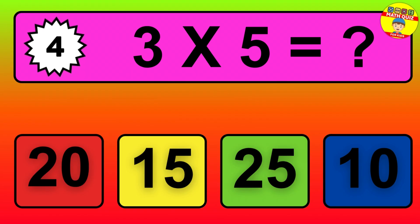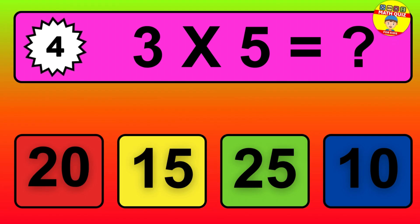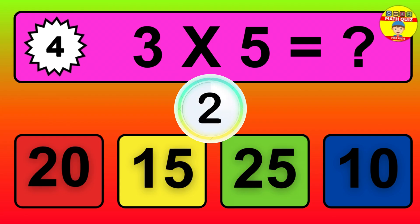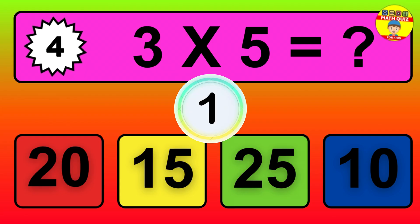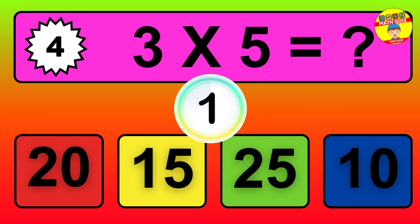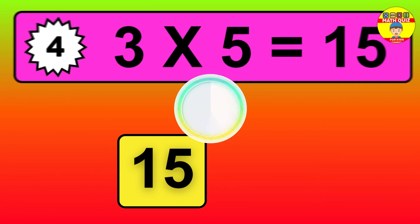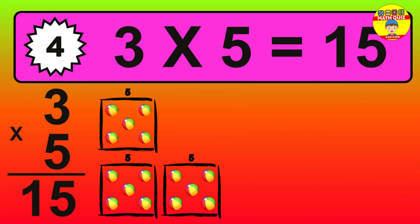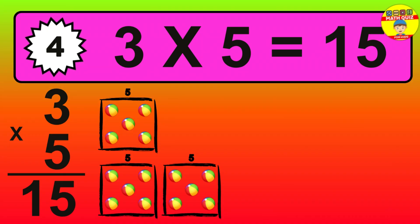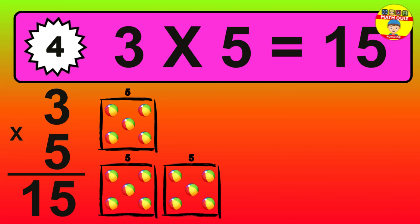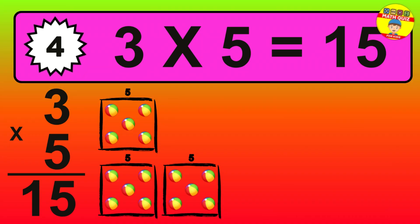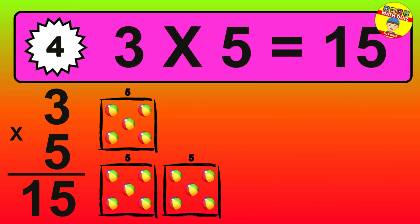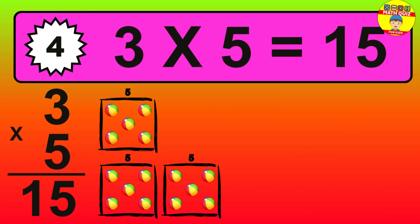Question 4. 3 times 5 equals what? The answer is 3 times 5 is 15. To calculate, we have 3 groups with 5 balls each one. So, how many balls do we have? 15 balls.